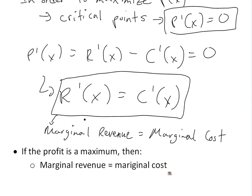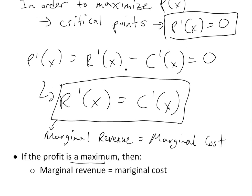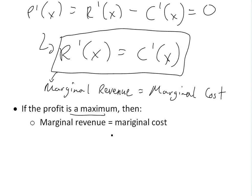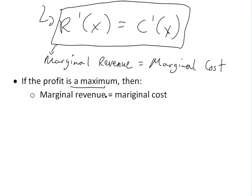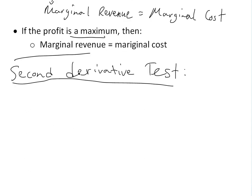So we have proven our statement: profit is a maximum when marginal revenue equals marginal cost. Now, to ensure that this is indeed a maximum, we'll look at the second derivative test — basically the second derivative of the profit function. You can see my linked video below for more detail on what the second derivative test is.